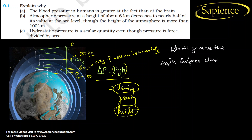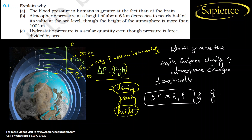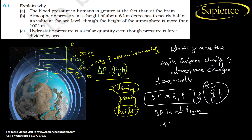The density of the atmosphere changes drastically as we move above the Earth's surface. Since pressure also depends on gravity, which decreases with altitude, delta P is not linear with height. Due to this reason, the atmospheric pressure at a height of 6 km decreases to nearly half its value at sea level.